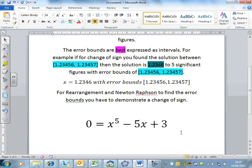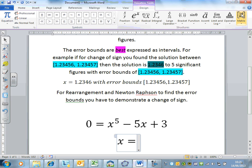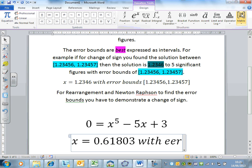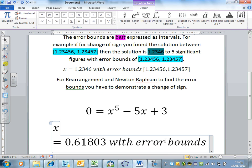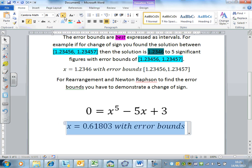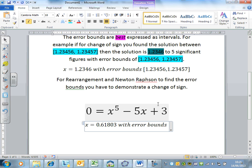So what we would write is: one of the solutions is x equals 0.61803 with error bounds 0.618025 to 0.618035.